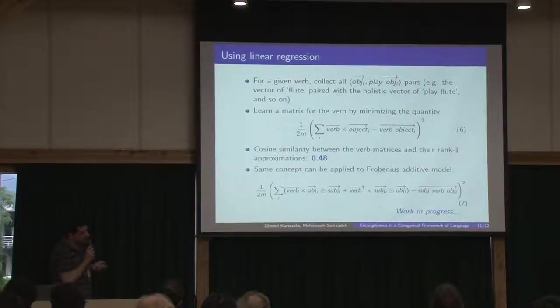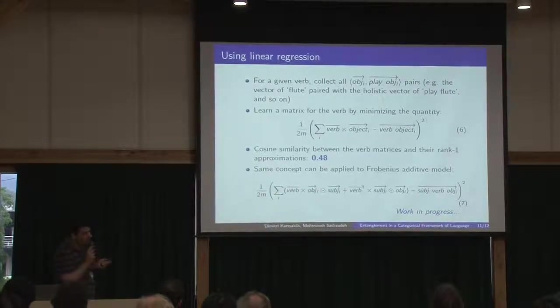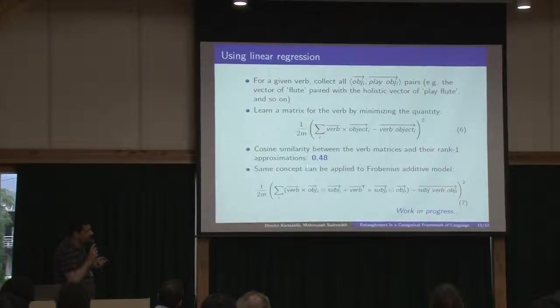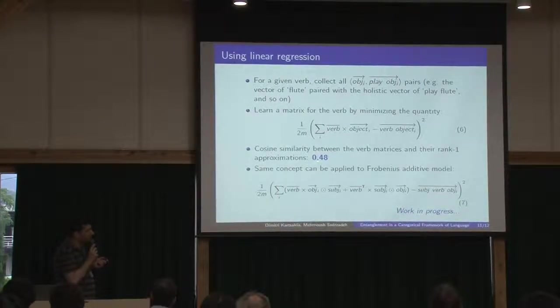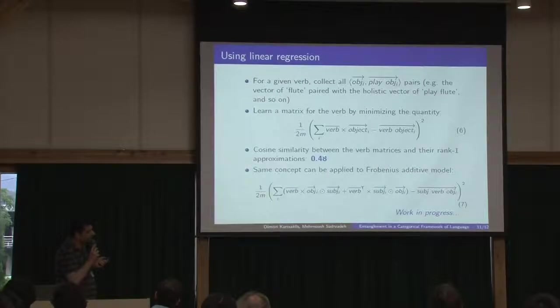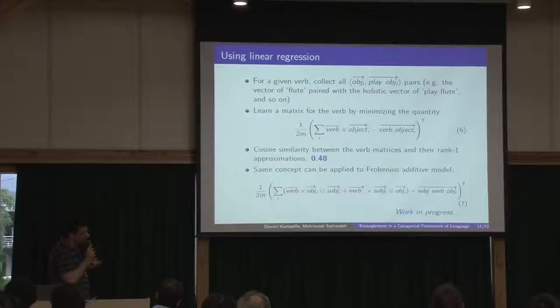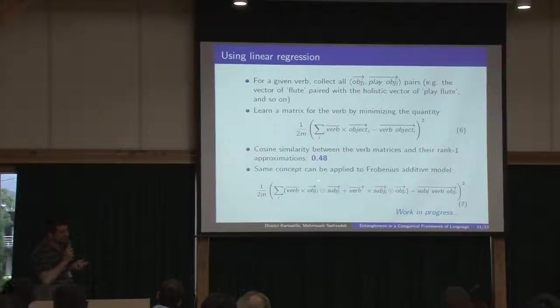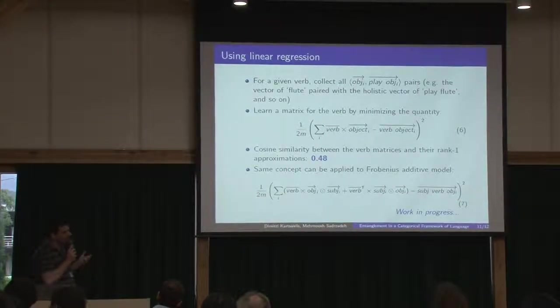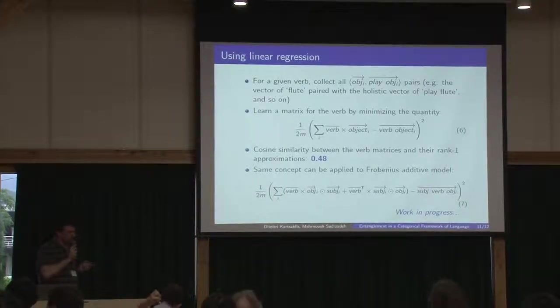We did an additional experiment by using linear regression to create matrices for our tensors and at this time the result was much better. So the similarity of the verb matrices with the rank 1 approximation was just 0.48. Although this was done for verb object structures, we are now trying to expand this for transitive verbs, which is much more difficult in a linear regression setting for many reasons I'm not going to explain right now. So this is a work in progress.